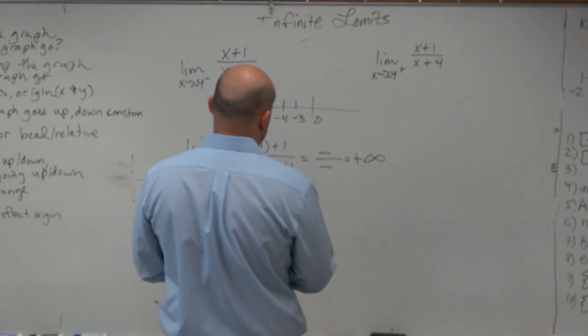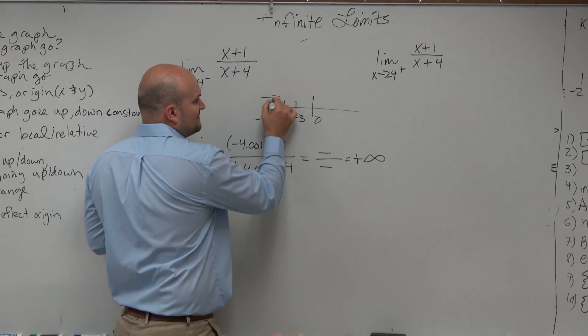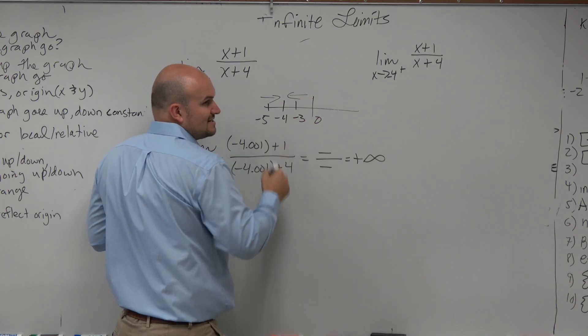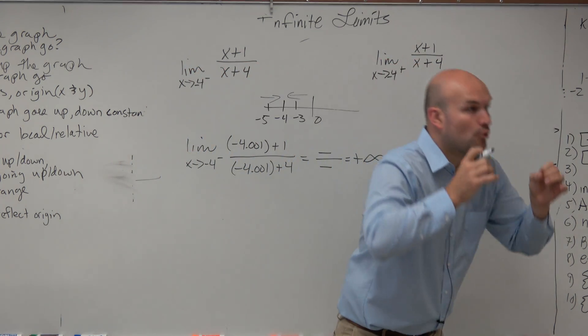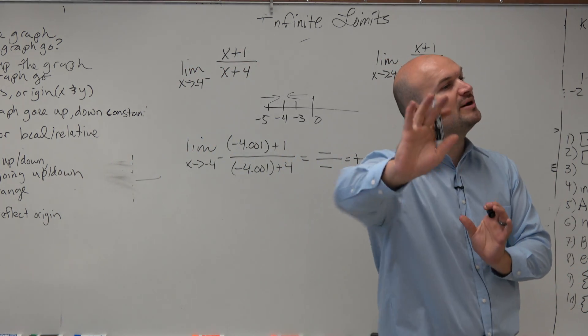The next one, we're going to do the exact same thing. Here's negative 4, so we did the left-hand side. Now let's do the right-hand side. What is a number that is really, really close to negative 4, but from the right?